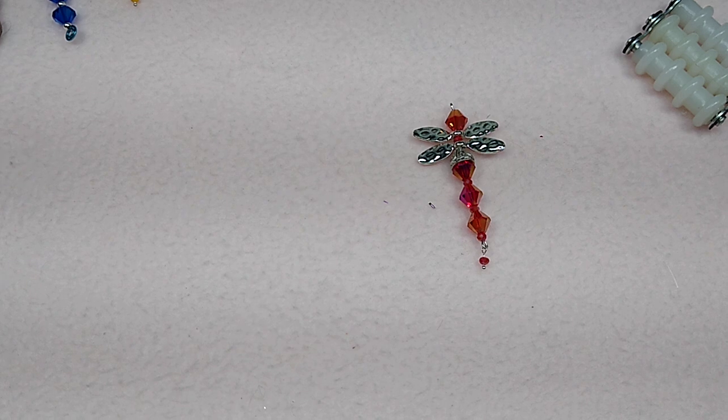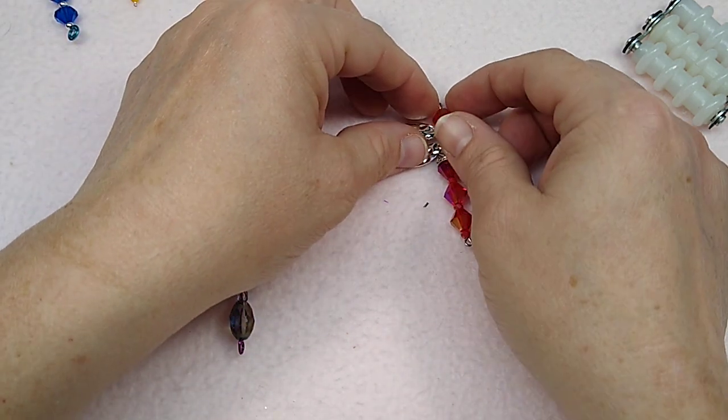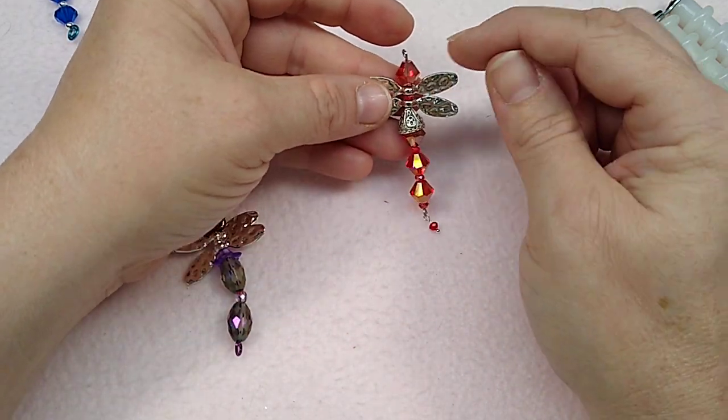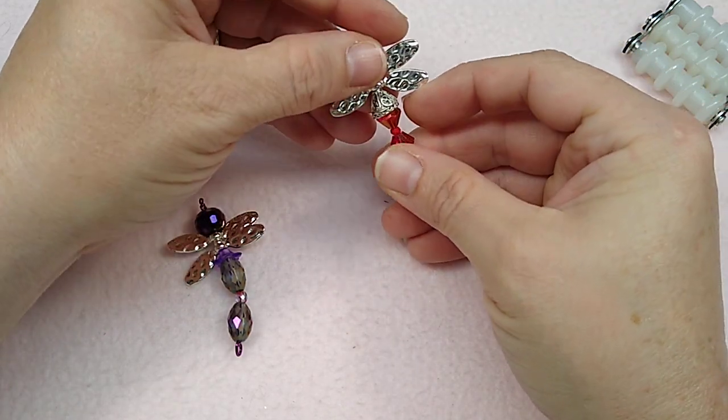And man, what a cute pendant. Hang this on some Coriana chain. And you could even bead up a little bit on the chain if you wanted. And they're just adorable. So there's the red one with the bicones.